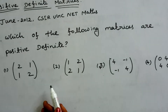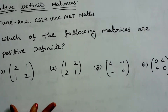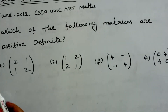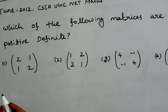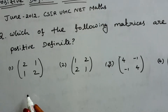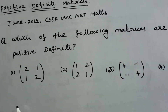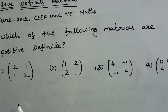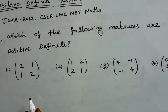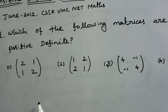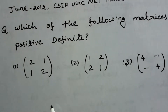We will identify which of the 4 options are positive definite matrices. We will discuss the method of leading principal minors, which we covered in the last 2 videos, to determine positive definite matrices.